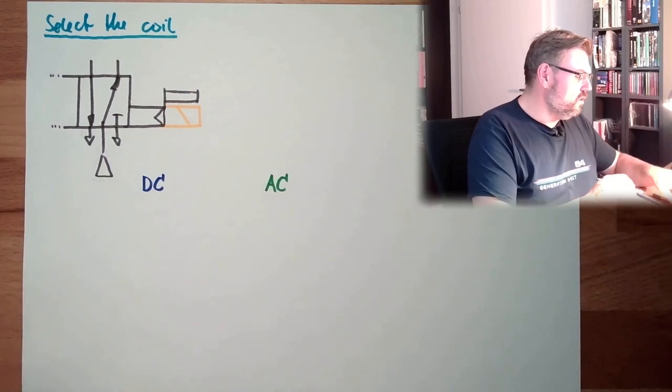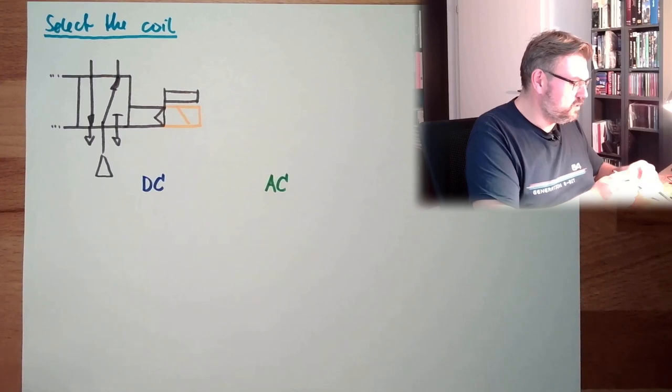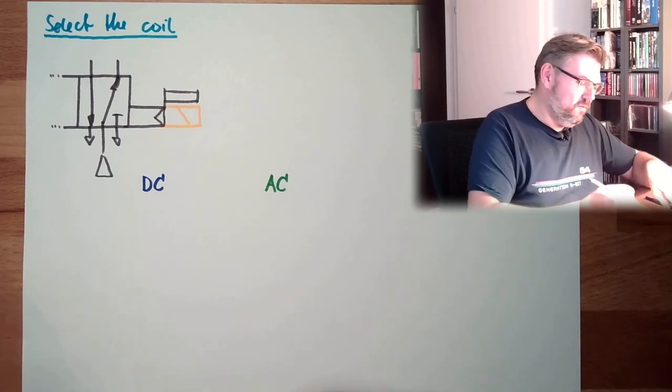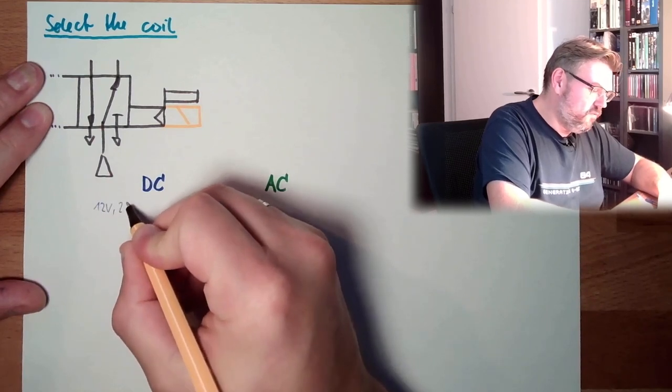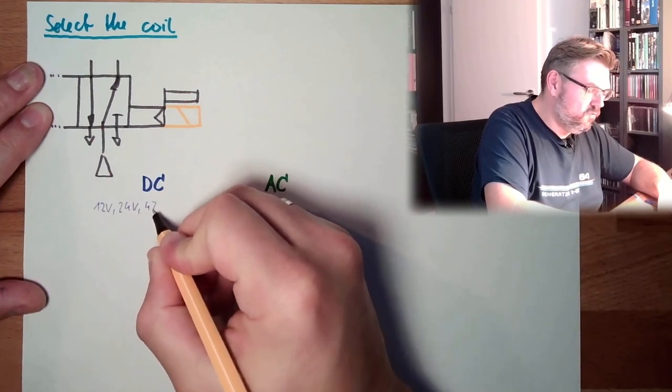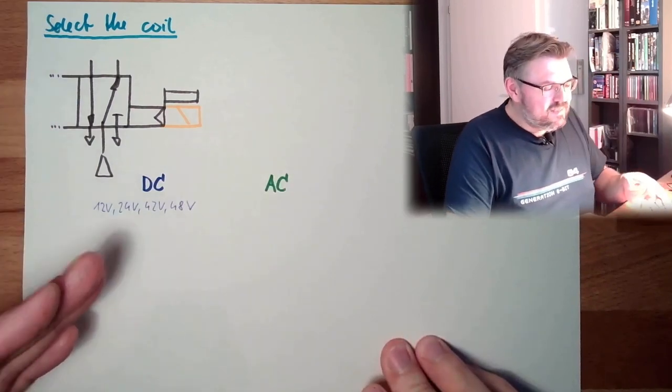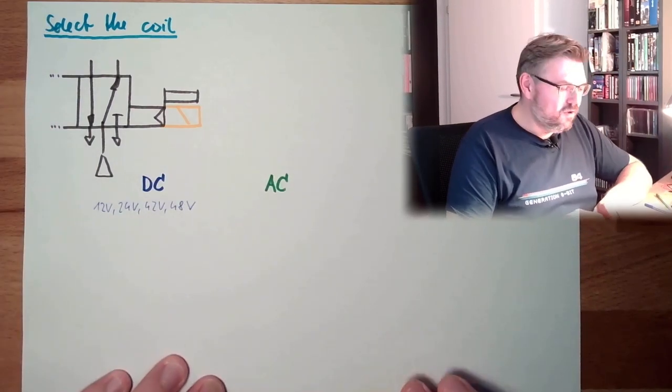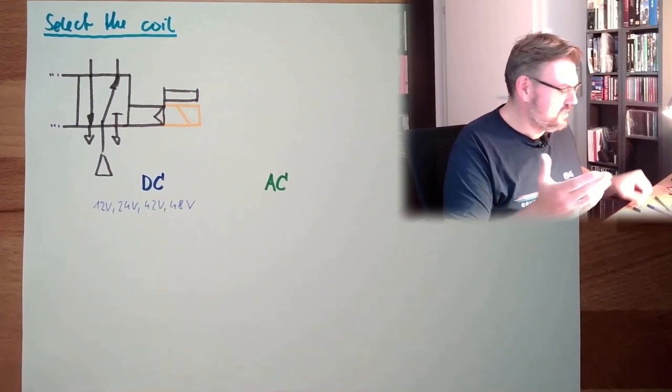What are usual voltages? The usual voltage level on DC are, well, there's 12 volt coils, there are 24 volt coils, there are 42 volt coils, there are 48 volt coils. These are typical values, they're not limited to. This is not an exhaustive list. This is just some example, a typical example.